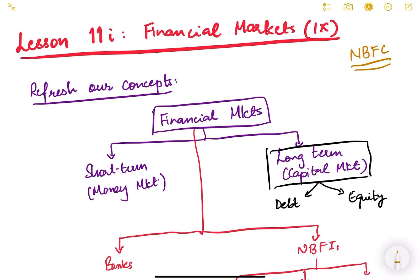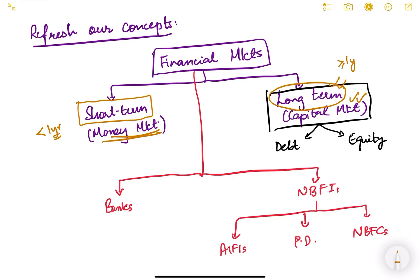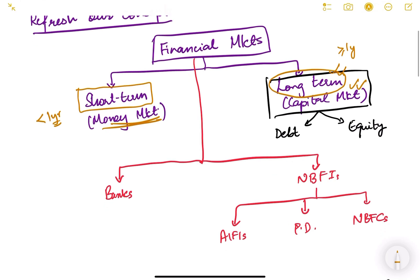Today we are going to start a new topic in financial markets, but first let us refresh our concepts with a little revision. Financial markets consist of two types: short-term instruments, also known as money markets, where instruments have less than one year maturity; and long-term instruments, known as capital markets, where instruments have maturity of one year or more. In capital markets there are two types of instruments: debt instruments and equity instruments.